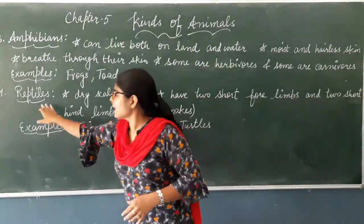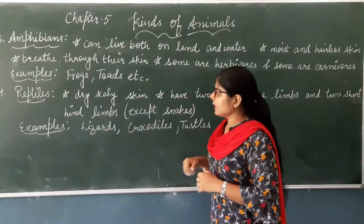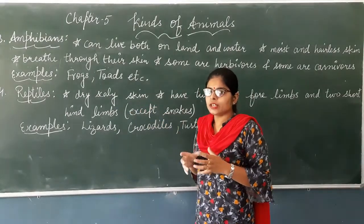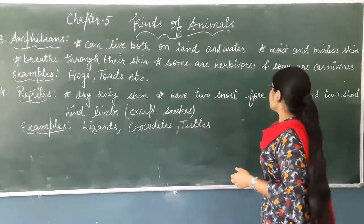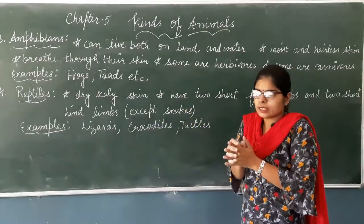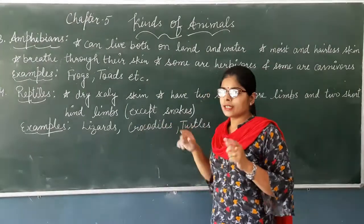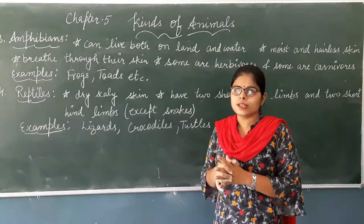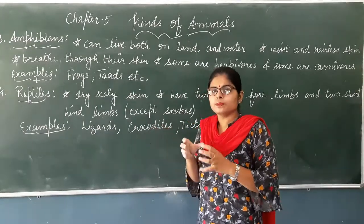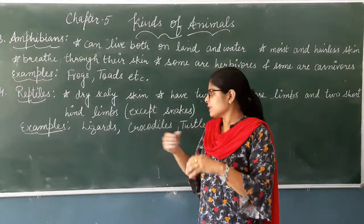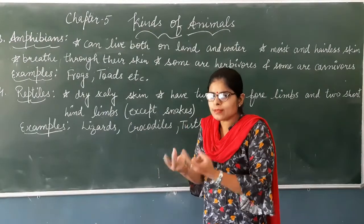The next type is reptiles — crawling creatures. They have dry, scaly skin. They have two short forelimbs and two short hind limbs, except snakes. Snakes have no limbs at all and simply crawl straight. All other reptiles, like lizards, have four limbs total — two in the front and two at the back.